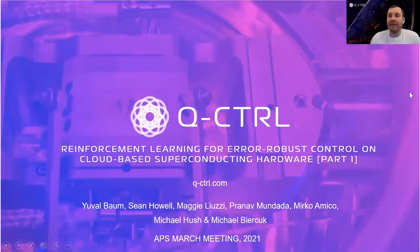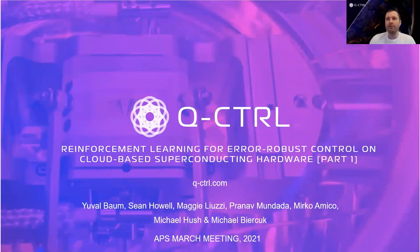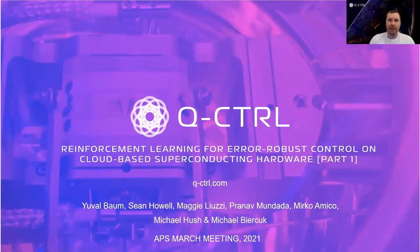Hello everyone. My name is Yuval. This presentation is the first part out of two, where we are going to show you how reinforcement learning can be used to optimize single and two qubit gates on real quantum hardware without having any prior knowledge of the underlying model.